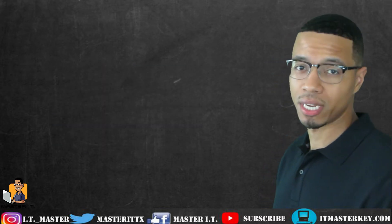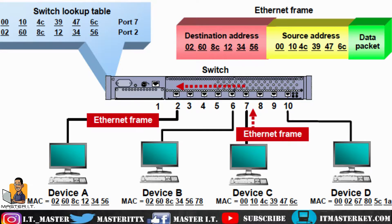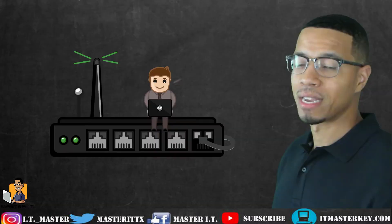Next up is a switch. A switch works at layer two of the OSI model. A switch is a lot smarter than a hub. A switch uses MAC addresses to figure out where it's supposed to send stuff, and a MAC address is just the physical address of a device. So instead of sending it to everybody, it's going to actually send it to the correct person and to the destination it's supposed to go to.